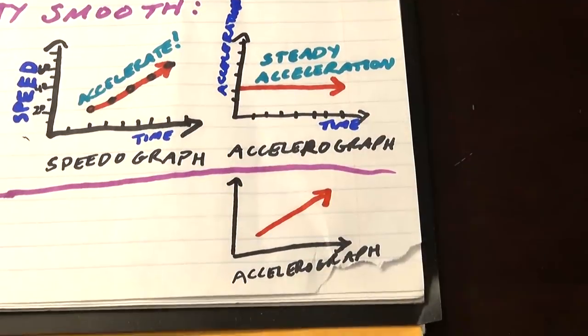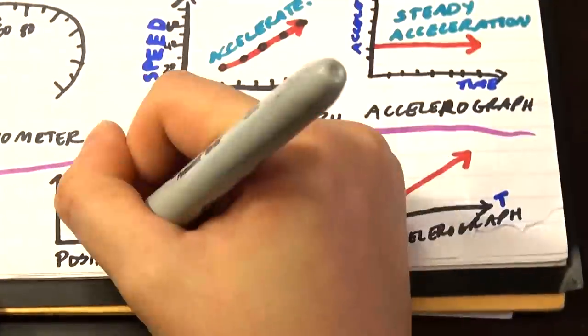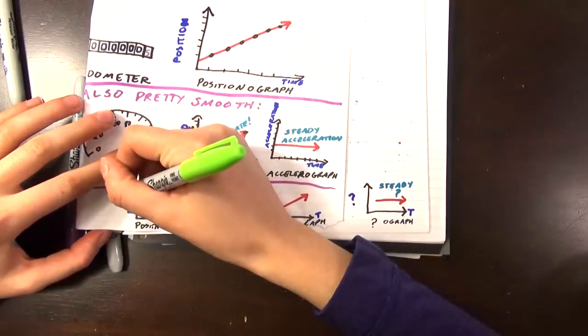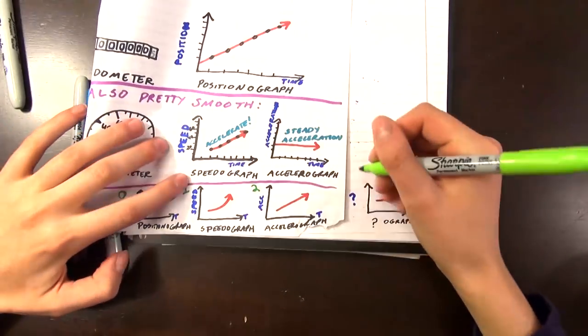So if a change in position is called speed, and a change in speed is called acceleration, what is a change in acceleration called? Or as we'd say in mathematics, what is the third derivative of position?